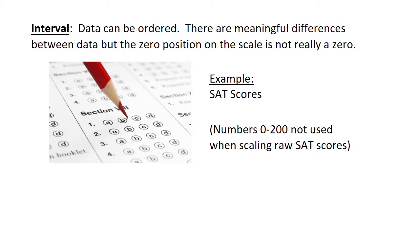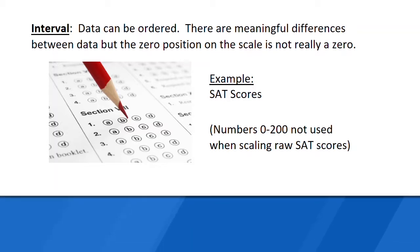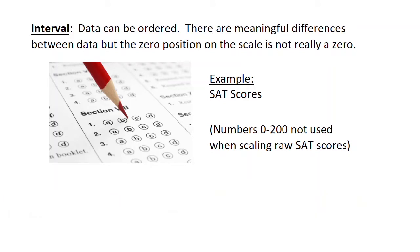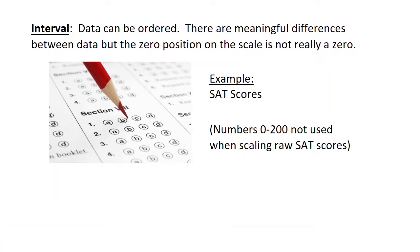The two highest levels of measurement are quantitative data only. The interval level means data can be ordered and there are meaningful differences between data values, but there's no zero position on the scale. An example is SAT scores — the scholastic aptitude test taken by about 1.6 to 1.7 million people in the United States every year. When scaling raw SAT scores, they do not use numbers from zero to 200, which is why this is interval data. The lowest score on the old SAT before it was redesigned in 2016 was 600, and only 324 people out of approximately 1.6 million scored that low in 2014.